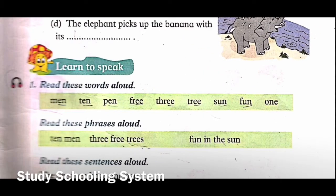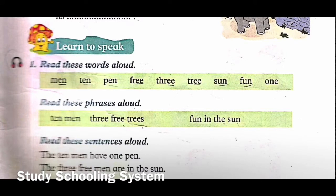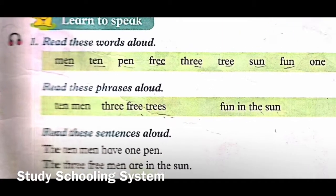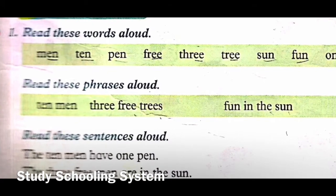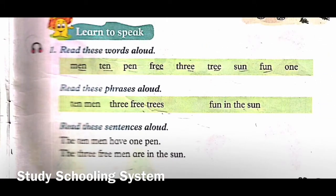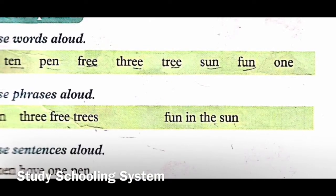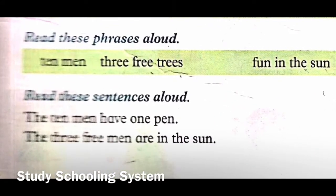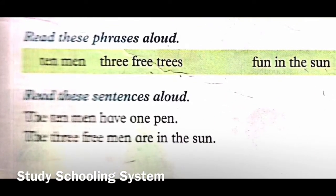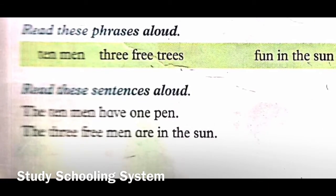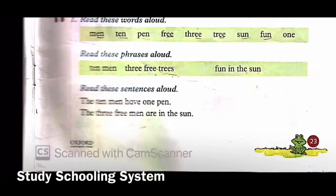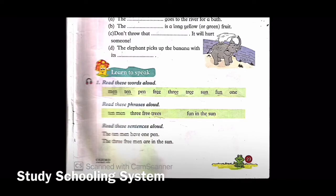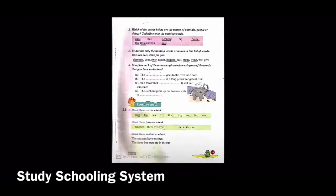Men, men, men - yes! Ten, pen, free, tree, tree, sun, fun, one. Now let's read these phrases out loud: ten men, three free trees, three free trees, fun in the sun. Now let's read these sentences: 'The ten men have one pen.' 'The three free men are in the sun.' Good job! You can read them yourself as well. After that, go to the next page.